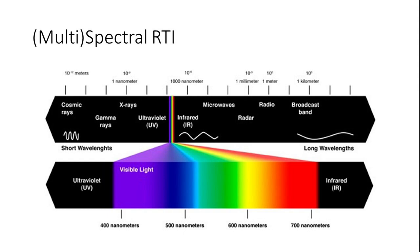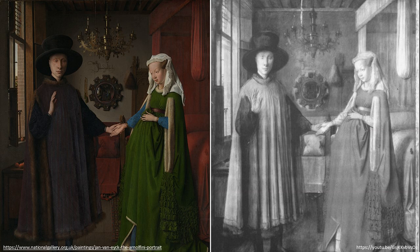There is one more thing to note about RTI. Although RTI cannot capture any information beneath the surface, it can be combined with spectral imaging. Only certain frequencies of light are visible; light in the infrared and ultraviolet regions has been used for a long time in the examination of works of art. Infrared light is particularly useful in revealing underdrawings no longer visible due to coverage by other layers, for example in a painting. Here you see the famous Arnolfini portrait by Jan van Eyck — infrared imaging has revealed the preparatory sketches and drawings.